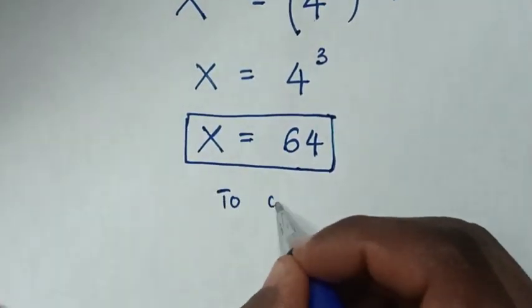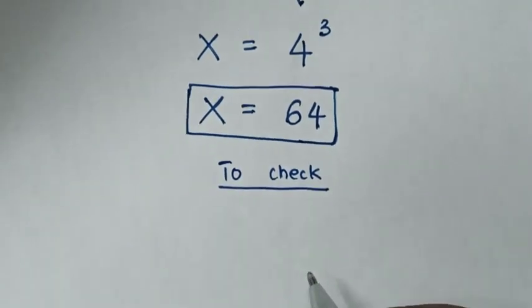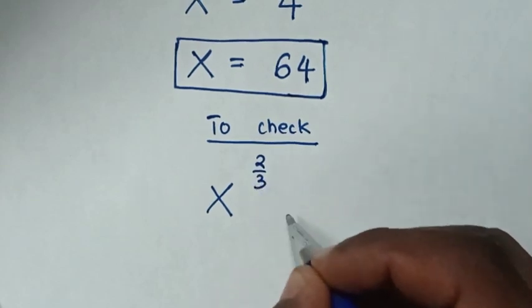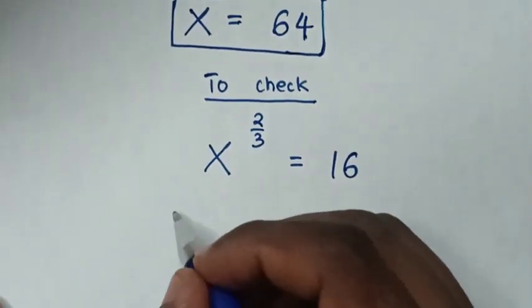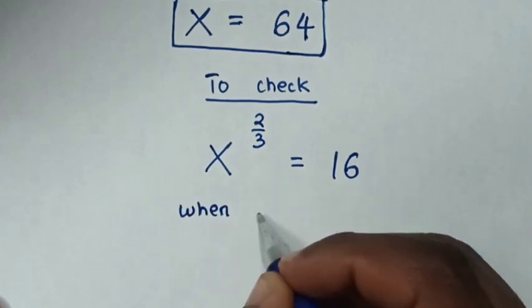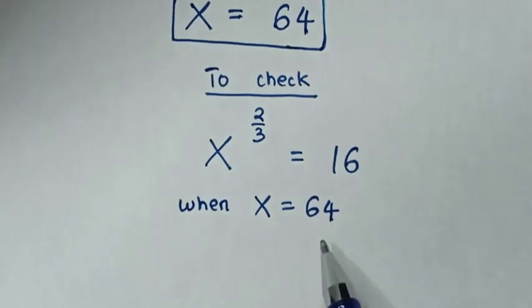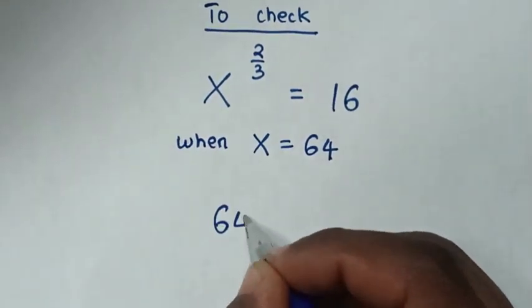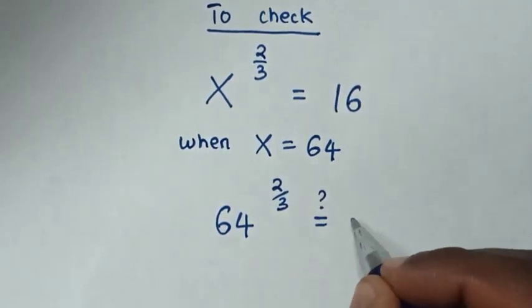Now to check from our problem, which is x to the power of 2 over 3 equals 16, when the value of x equals 64. So we substitute 64 into this position of x. Then it will be 64 to the power of 2 over 3 equals 16.